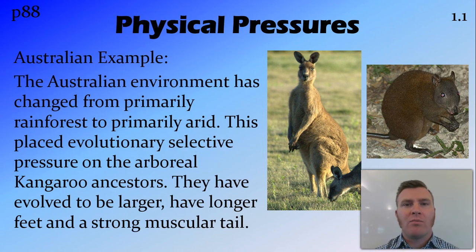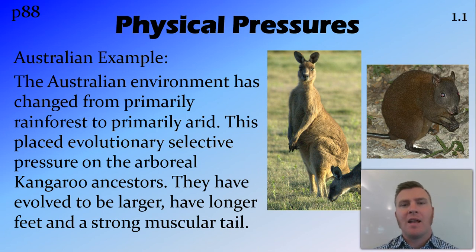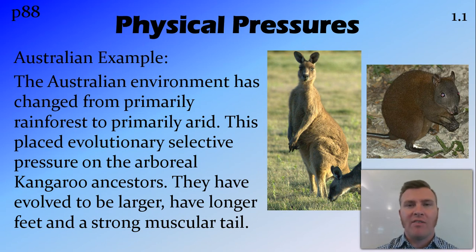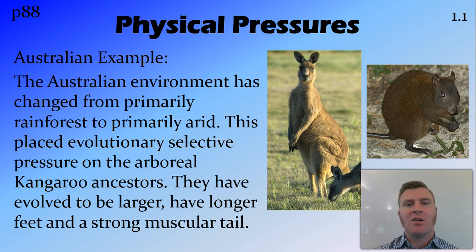We know from previous videos that the Australian environment used to be primarily a rainforest, and as it moved northward, it has become primarily arid. This placed a physical strain or selective pressure on the ancestors of the kangaroos. They were originally arboreal, living in the trees, which is great in a rainforest. But as the area got drier and hotter, they came down out of the trees and evolved to work better on the ground — they are larger, have longer feet for running and getting food, and a strong tail for balance. These are all results of the physical pressure placed on the ancestors of the modern kangaroo.